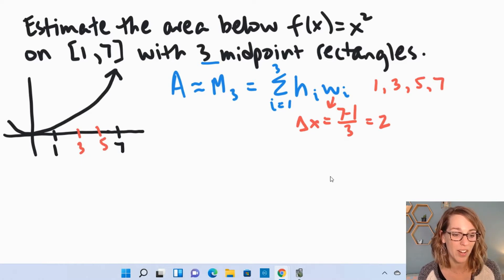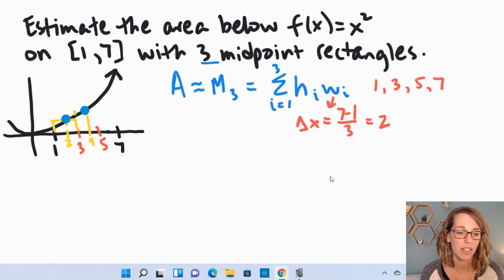But my midpoints are going to determine the height of these rectangles. So if I go up from the midpoint, I've got my first rectangle between 1 and 3, with a height halfway through there at 2. My next rectangle is going to have a height halfway through at 4, and then the next one is going to have the height measured at the midpoint of 6. So that gives me my three rectangles that I can find the area from.